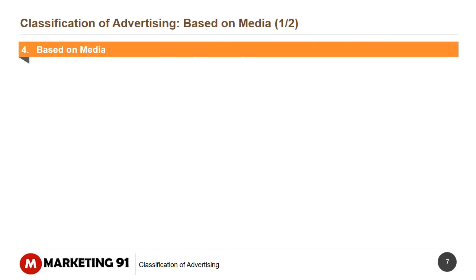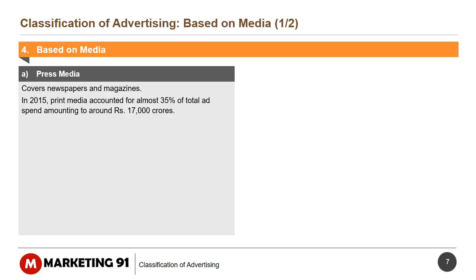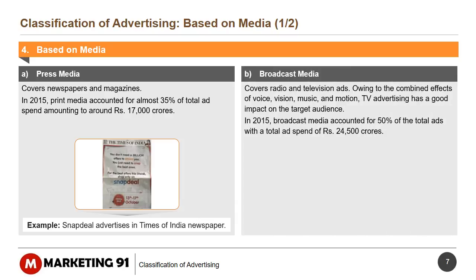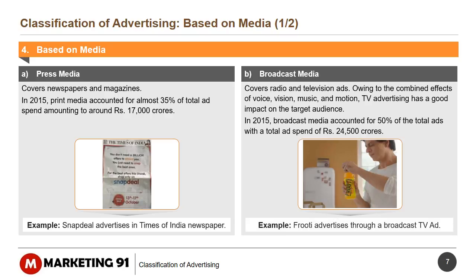The next classification is based on media, which is again subdivided into four classifications. Press media covers newspapers and magazines. In 2015, print media accounted for almost 35% of total ad spend, amounting to Rs. 17,000 crores. For example, Snapdeal advertises in the Times of India newspaper. Broadcast media covers radio and television ads. Owing to the combined effects of voice, vision, music, and motion, TV advertising has a good impact on the target audience. In 2015, broadcast media accounted for 50% of total ads with a total ad spend of Rs. 24,500 crores. For example, Fruity advertises through a broadcast TV ad.